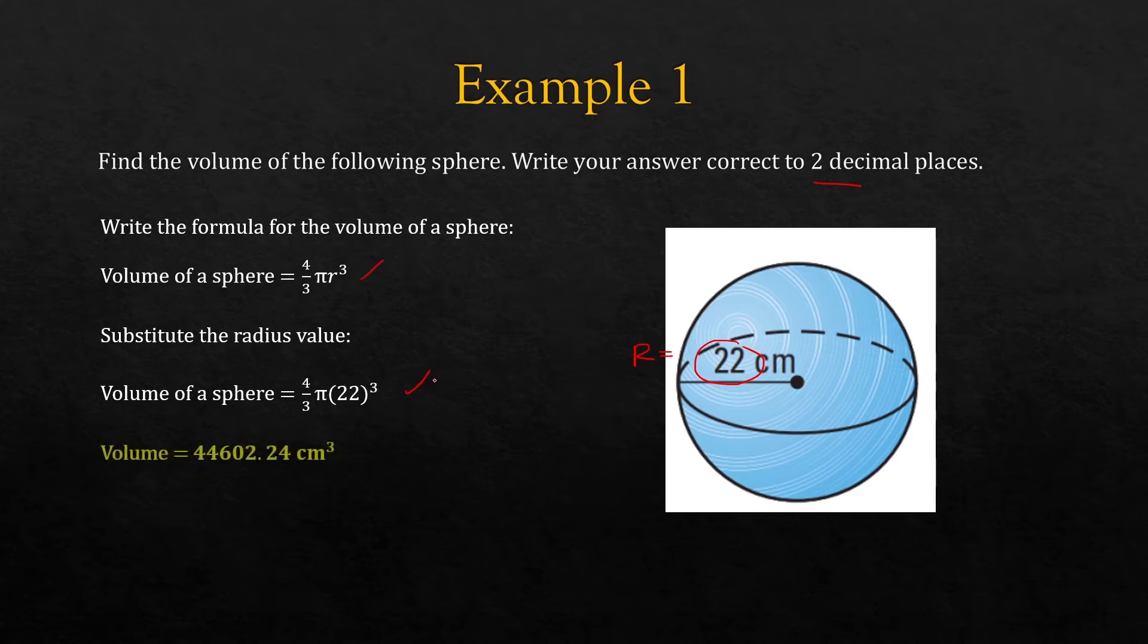So 4/3 pi r cubed, 22 cubed. We'll get the answer 44,602.24 cubic centimeters. And that's two decimal places here.